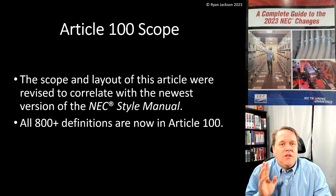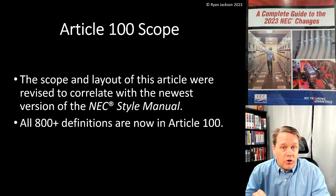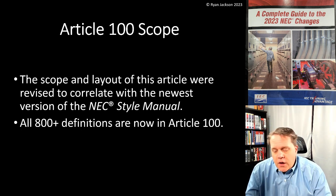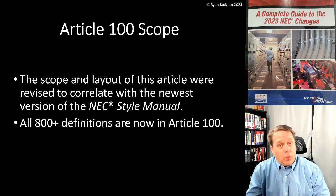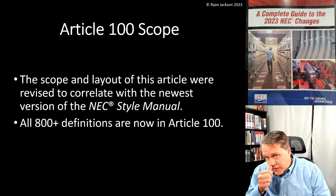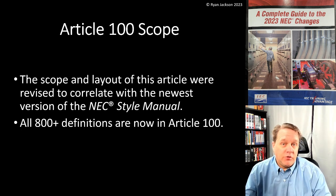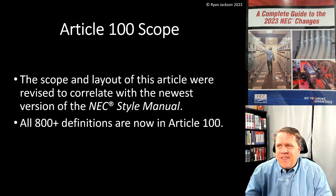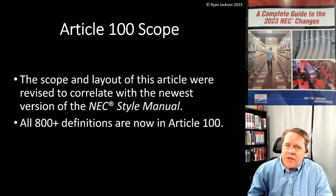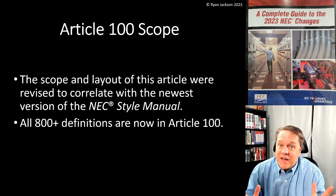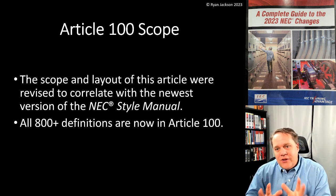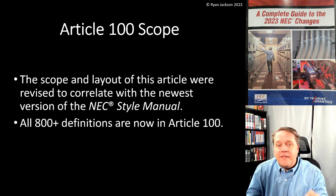In the latest version of the Style Manual, a revision was made stating that all defined terms in the NEC must be in Article 100. Before 2020, most terms were defined in Article 100 if used in more than one article; if a term was used only in one article, it was defined there. For example, the word 'bundled' was defined in Article 520 — motion picture theaters — so it couldn't be applied throughout the code. That has now changed.